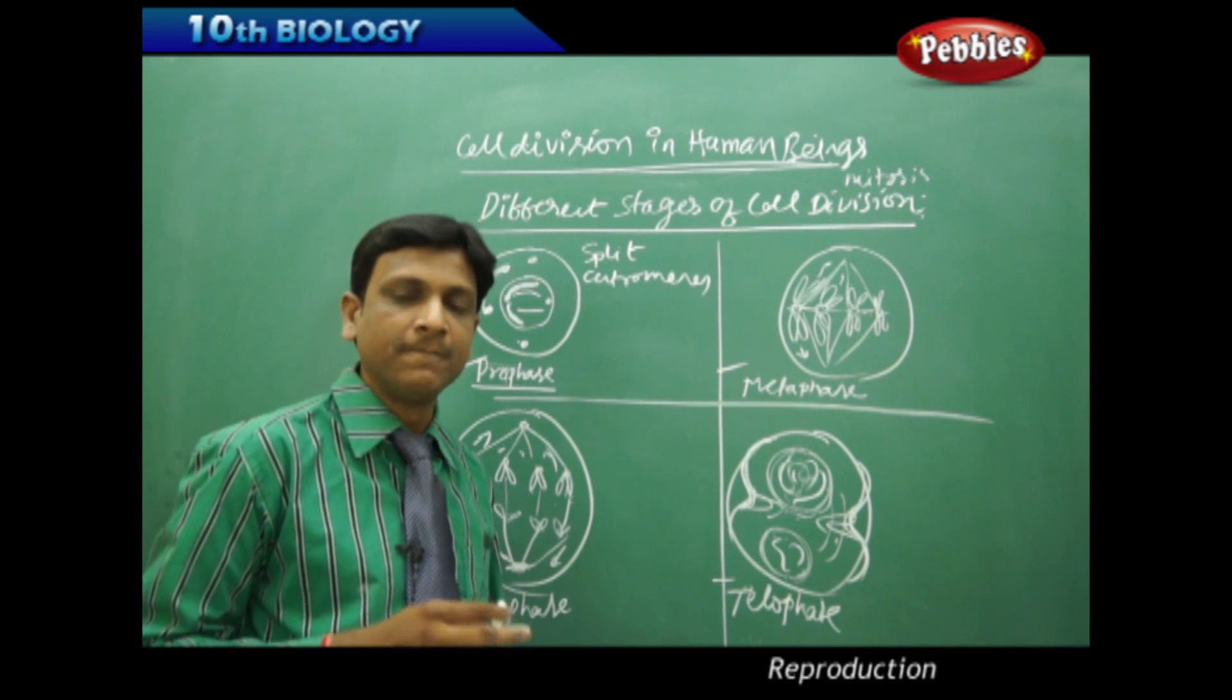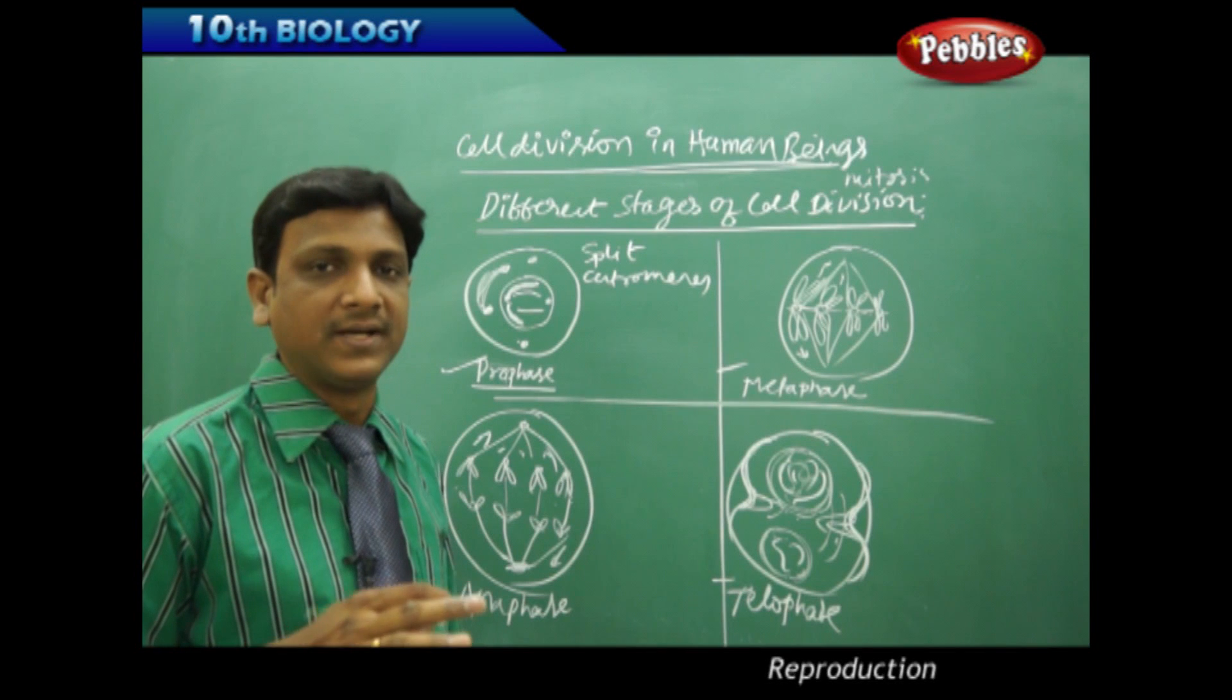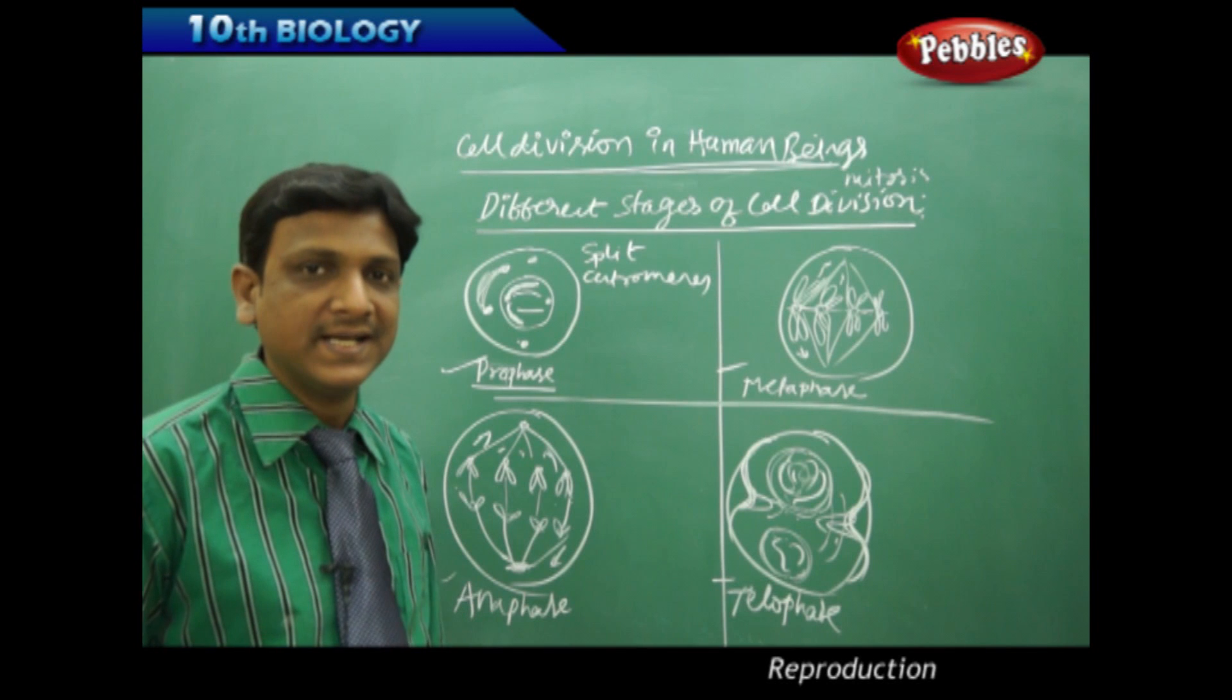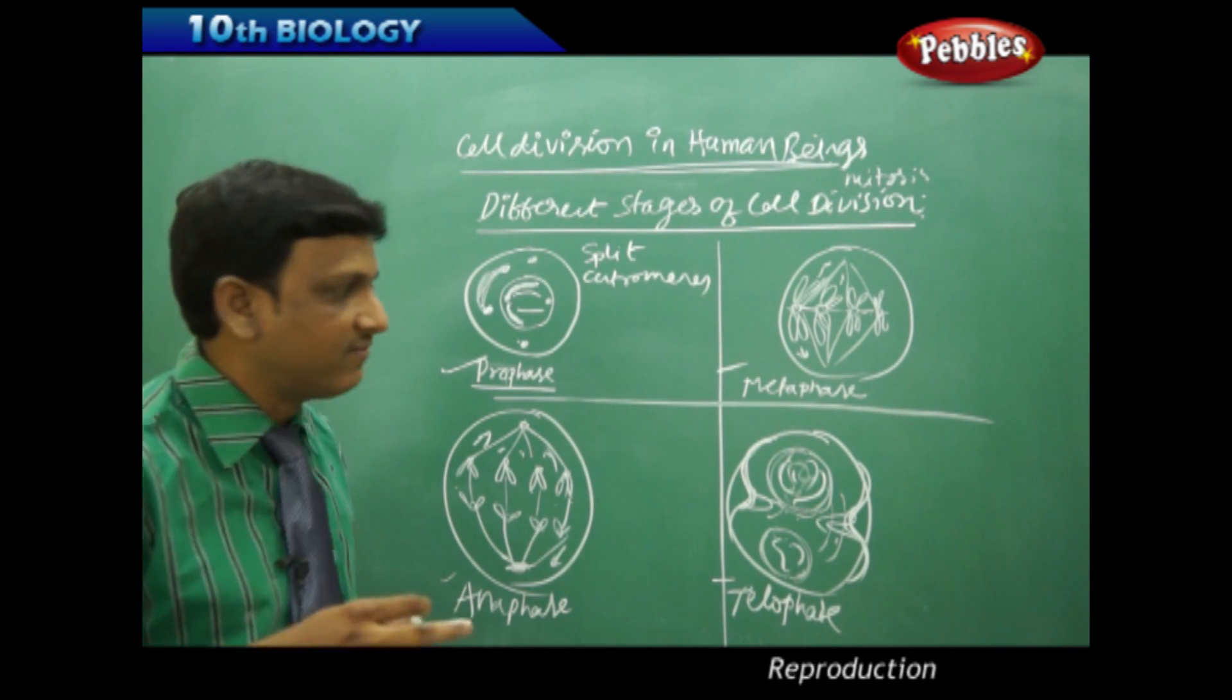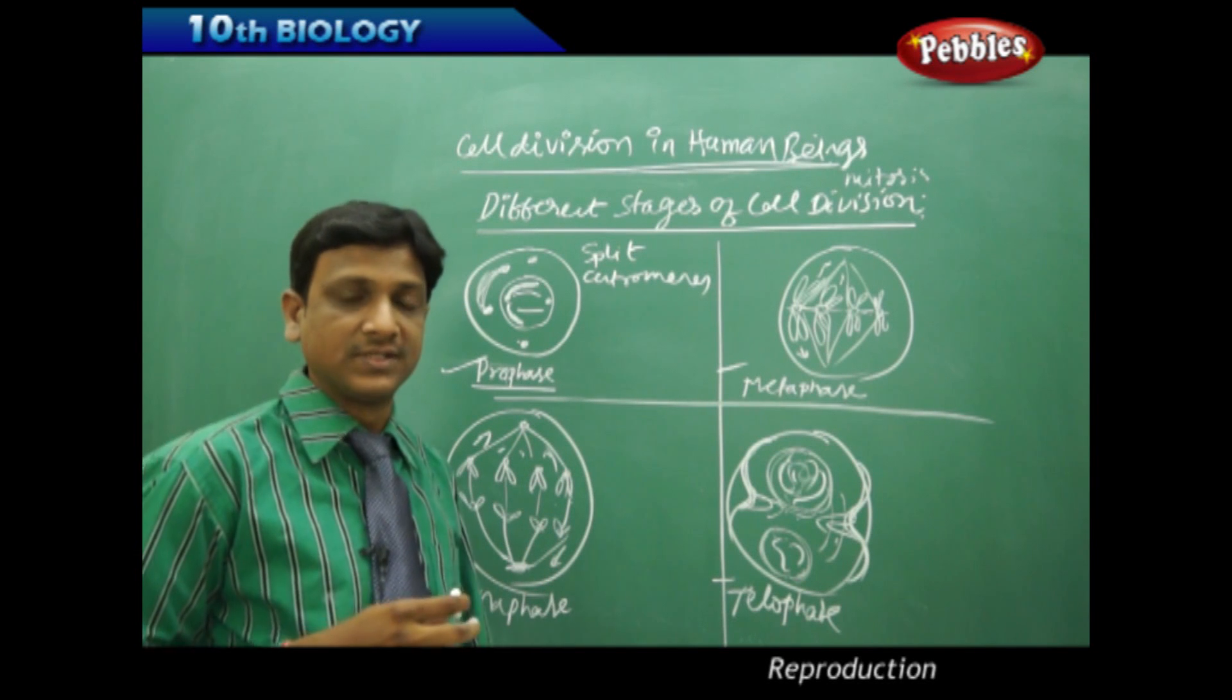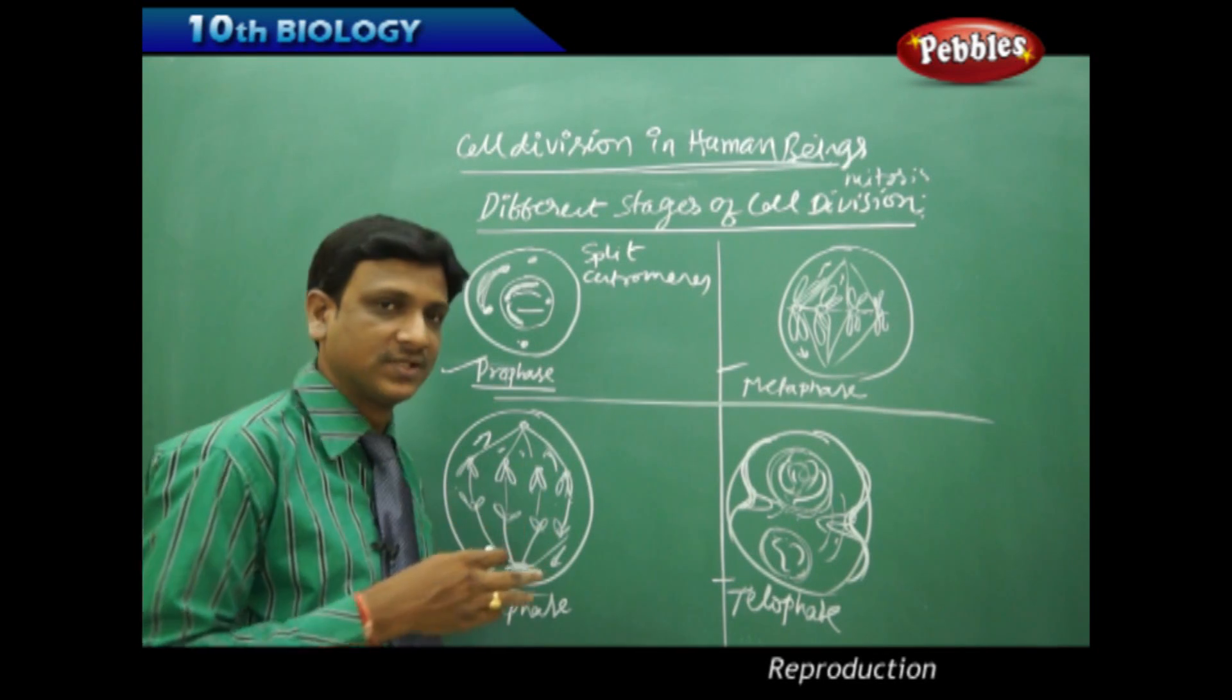You can observe mitosis by collecting a permanent slide of mitosis which will be available in the laboratory, and you can use a compound microscope to study the changes and events that happen in the four different phases of mitosis.